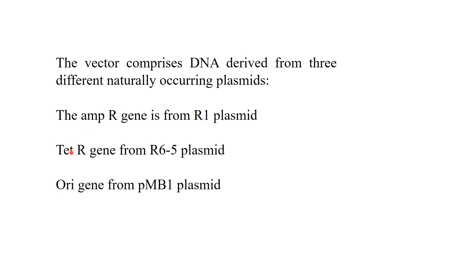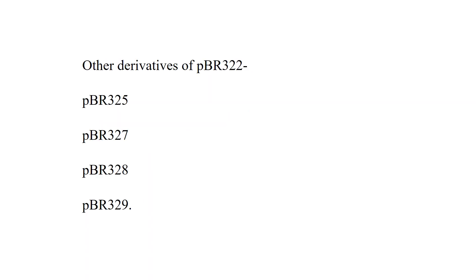The tetracycline gene was obtained from the R65 plasmid. The origin of replication of pBR322 was taken from the pMB1 plasmid. So pBR322 was the first artificially synthesized cloning vector. Other derivatives of pBR322 include pBR325, pBR327, pBR328, and pBR329.